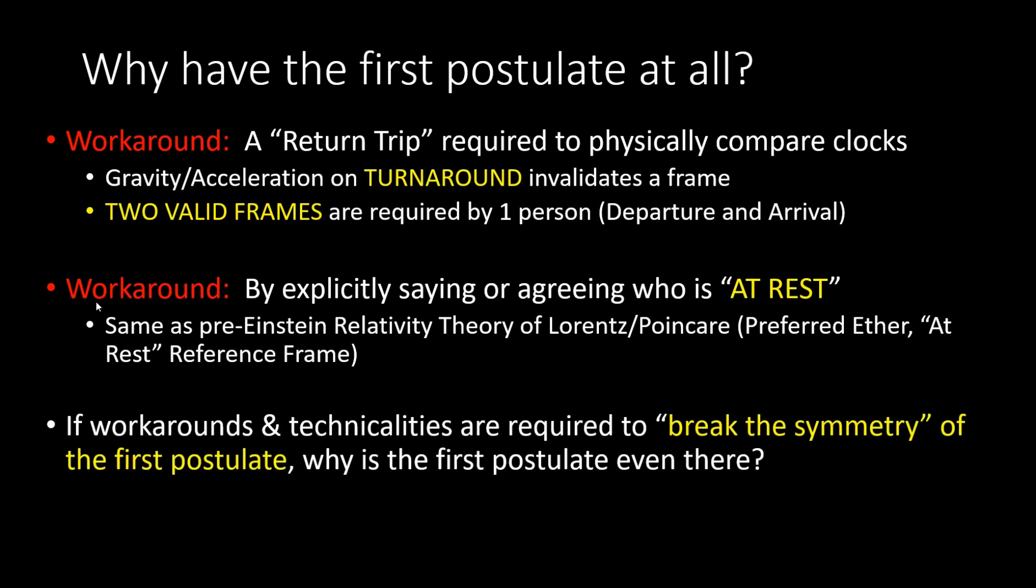So again, if you're going to use these types of workarounds to invalidate a frame or declare who is moving and who is at rest, then why do we even have the first postulate in Einstein's theory of relativity? The answer to that is because it is used in section 2 of his paper when he tries to define something called relative simultaneity.